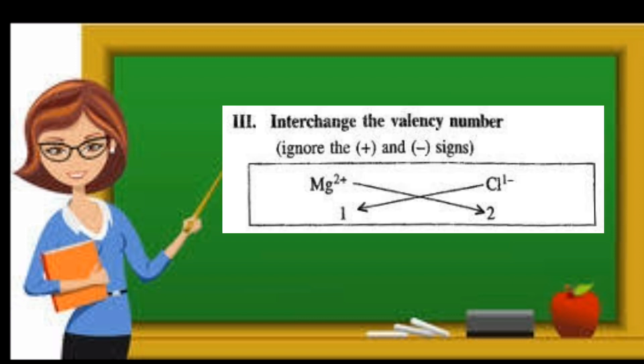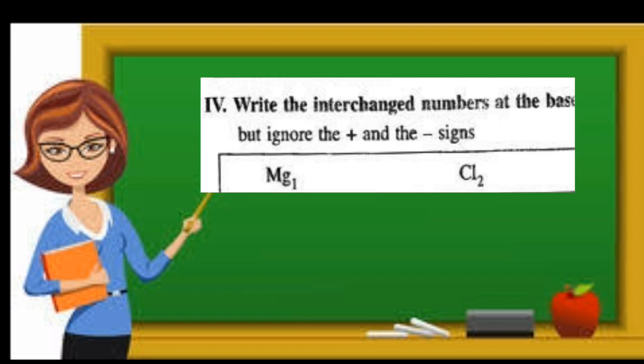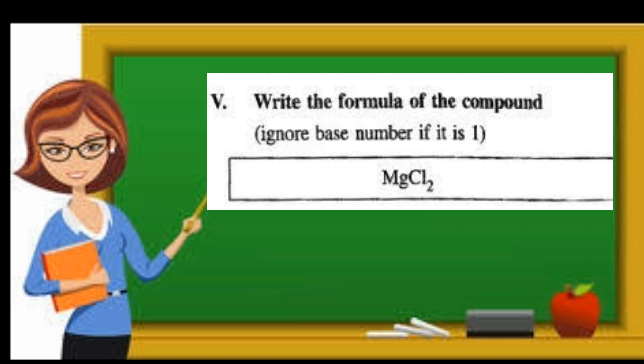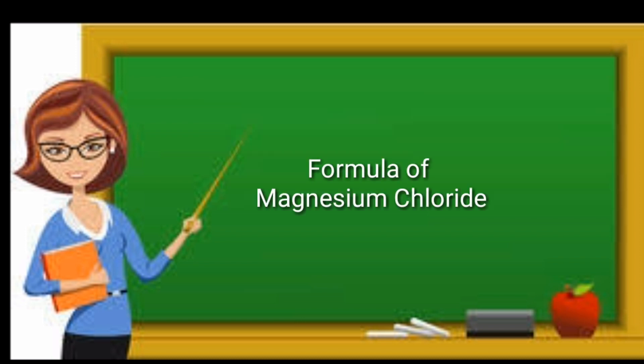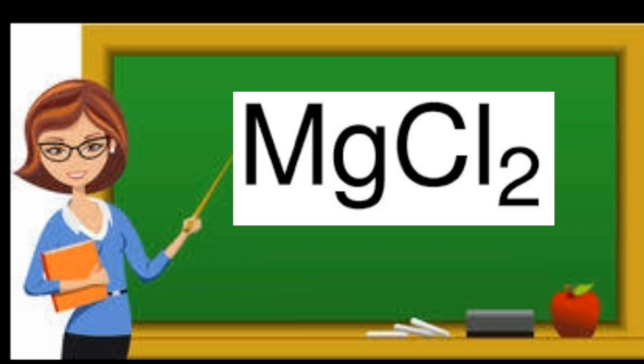Interchange the valency and ignore the charges. Fourth step: write the interchange number at their base. Then write the formula of the compound. Ignore if they are having 1 as the subscript. So here we are showing the example of magnesium chloride with the formula MgCl2.